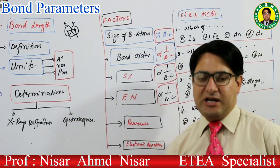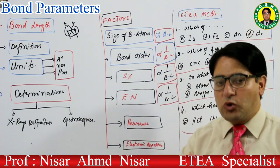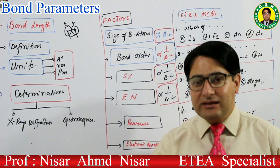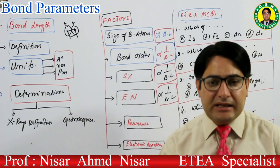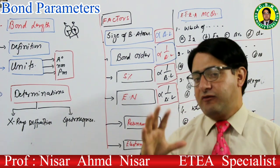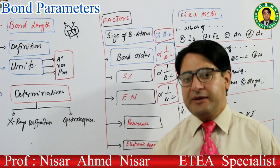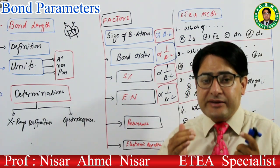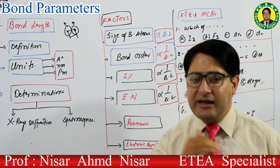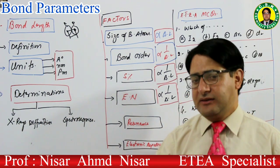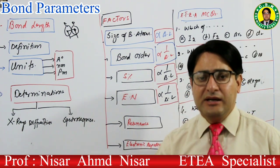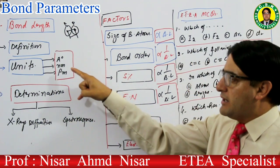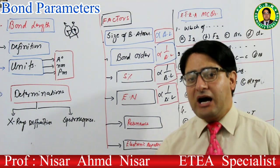Definition کے بعد unit پہ جائیں گے۔ Bond length کو کون سے unit سے measure کیا جا سکتا ہے؟ Bond length can be measured using any unit of length, but as it is very small length, normally smaller units — angstrom, nanometer, and picometer — are used.